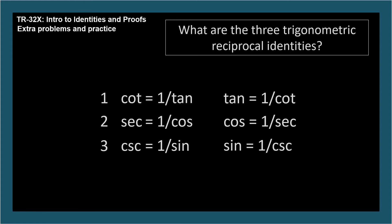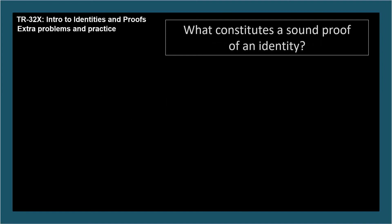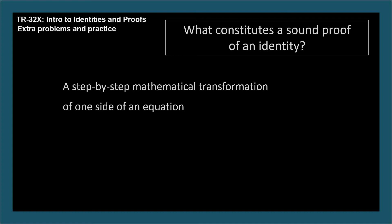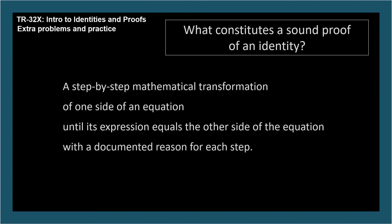But first, what constitutes a sound proof of an identity? It must be a step-by-step mathematical transformation of one side of an equation until its expression equals the other side of the given equation, with a documented reason for each step. You should think of your proof as a recipe for someone else to follow to understand and duplicate the logic in your proof.